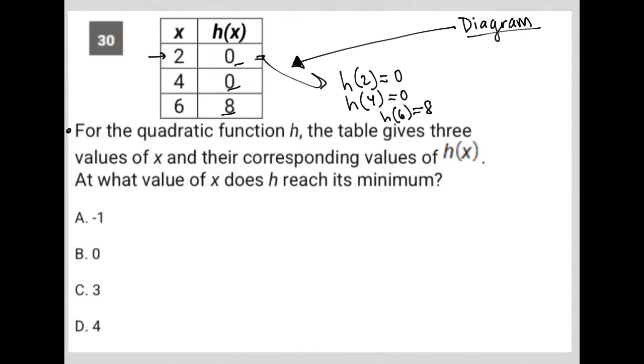So the question here says, for the quadratic function h, the table gives three values of x and their corresponding values of h of x. At what value of x does h reach its minimum? Well, I'm going to graph this.